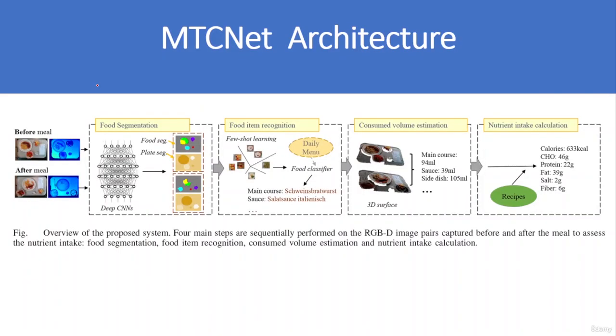So here you can see the overview of the MTCnet pipeline. Input image before the meal and input image after the meal is supplied to the food segmentation network or MTCnet for food segmentation. After that, few-shot learning algorithms are used for food item recognition, and then consumed volume is estimated. Here you can see the 3D surface of the food, and finally you can see the nutrient intake is estimated—here you can see the calories, CHO, proteins, fat, salt, and fiber that food contains.